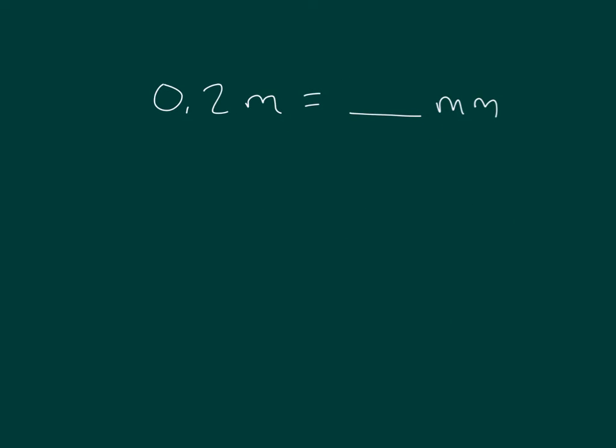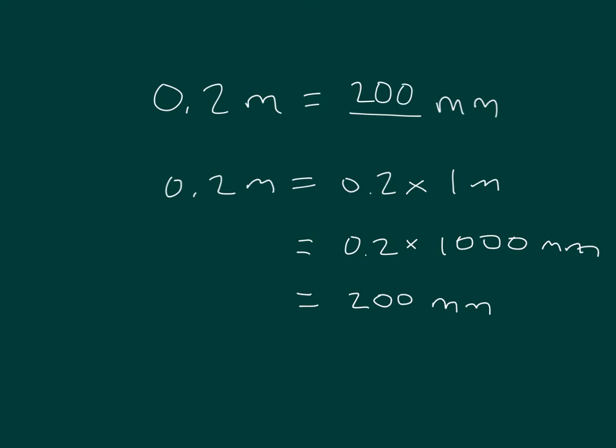Let's convert meters to millimeters. We start with the same line. 0.2 meters equals 0.2 times 1 meter. There are 1,000 millimeters in a meter, so we can go ahead and write 0.2 times 1,000, which means if we multiply it together, we get 200 millimeters. 0.2 meters equals 200 millimeters.